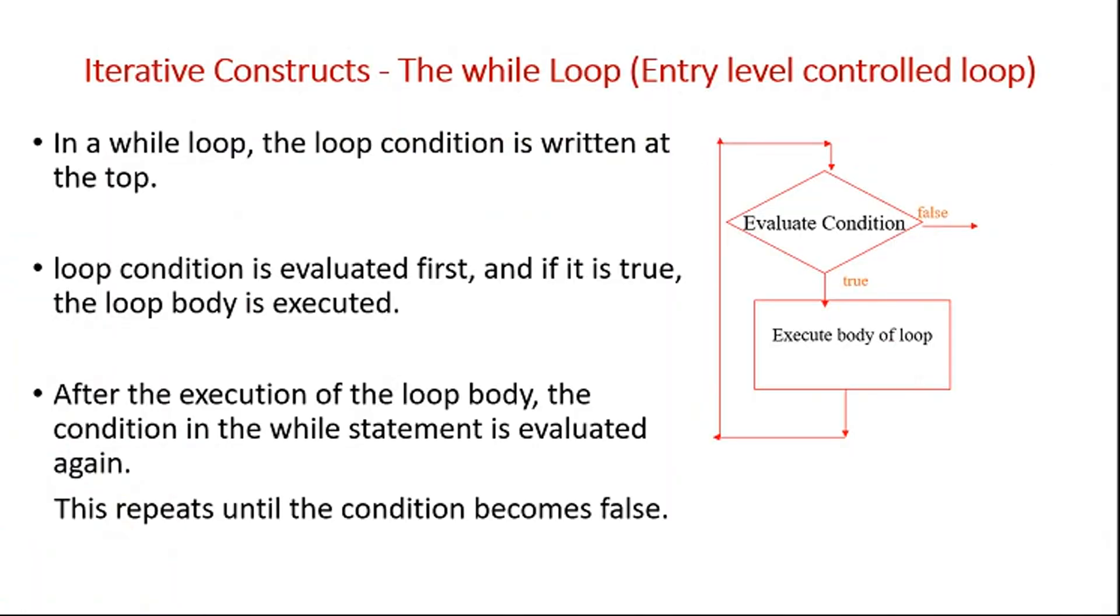These are also called with the alternative name, that is iterative constructs. So the first type is the while loop. It is the entry level control loop. It means condition will be checked at the start itself. So these are some of the properties you can say for the while loop.